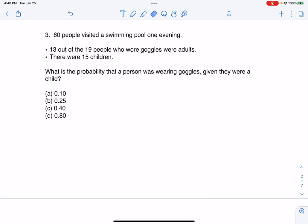Hey everyone, let's look at our next multiple choice question. It says: 60 people visited a swimming pool one evening. 13 out of the 19 people who wore goggles were adults. There were 15 children. What is the probability that a person was wearing goggles given they were a child?